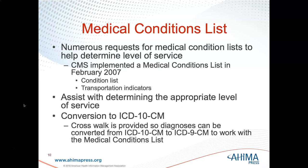The medical conditions list is on page 152, and it covers determining the level of service guidelines. Medicare CMS has provided an updated medical conditions list to be used in conjunction with the ambulance fee schedule, which came out in February 2007. At the top of page 152 there are two figures: one is an ambulance origin and destination modifier example, and the next is the foundation of the ambulance fee schedule. Figures 7.6 and 7.7 walk you through an example calculation of the ambulance fee schedule. An excerpt of the ambulance medical conditions list is in Figure 7.8 on the bottom of page 153.